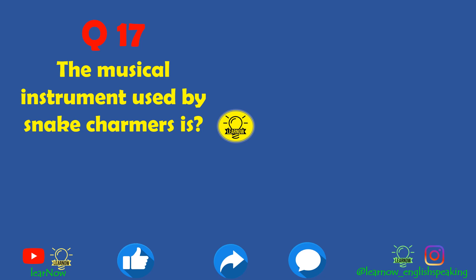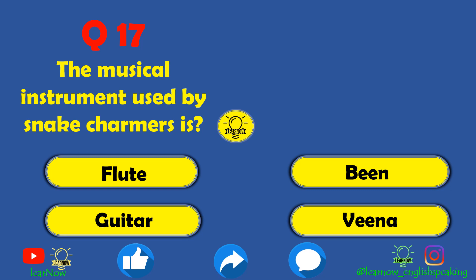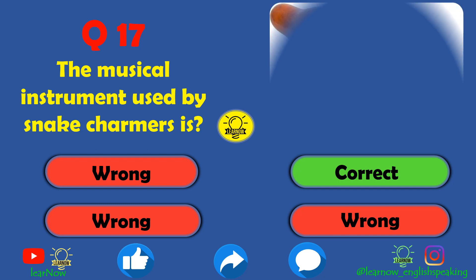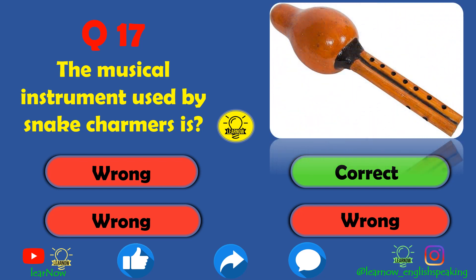Next question: the musical instrument used by snake charmers is called what? You may have seen snake charmers use a special instrument when making snakes dance. Flute is wrong, guitar is wrong, veena is also wrong. The correct answer is been — you can see the image of a been, the musical instrument used by snake charmers.